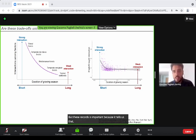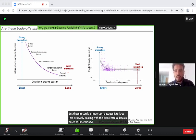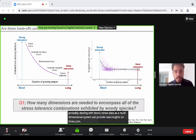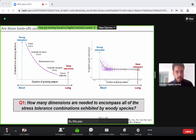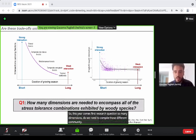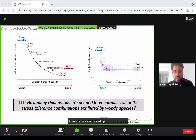But this result is important because it tells us that dealing with abiotic stress data as a multi-dimensional system can provide new insights on trade-off dynamics. So here comes the first research question: how many dimensions do we need to encompass all stress tolerance combinations exhibited by woody species?